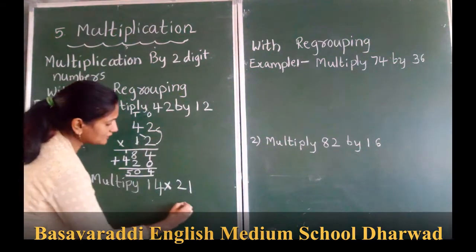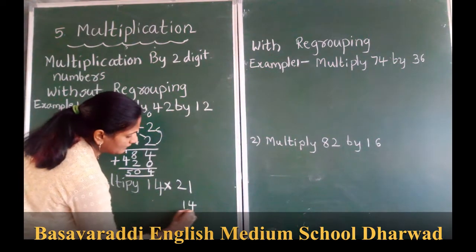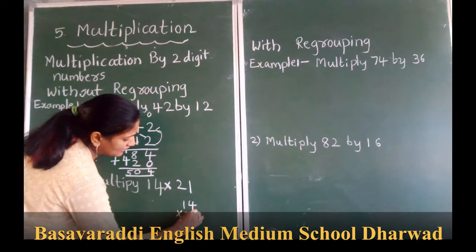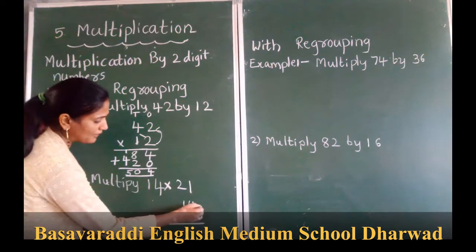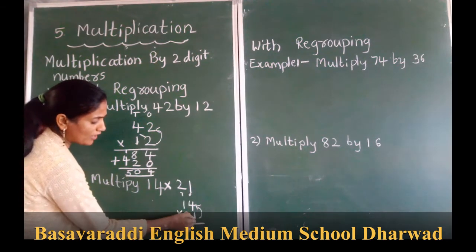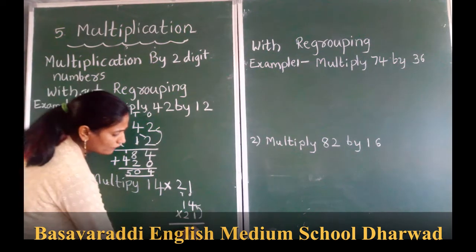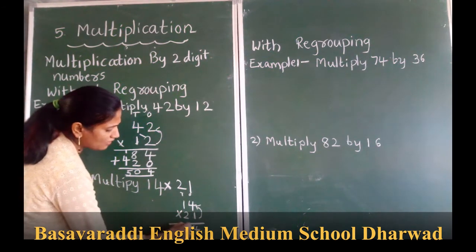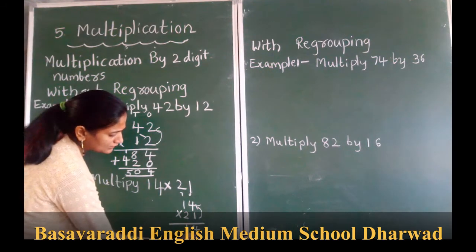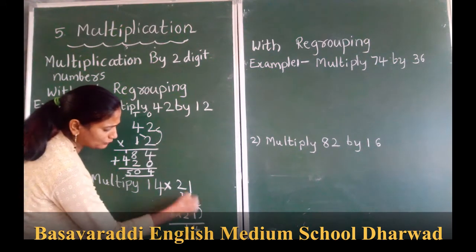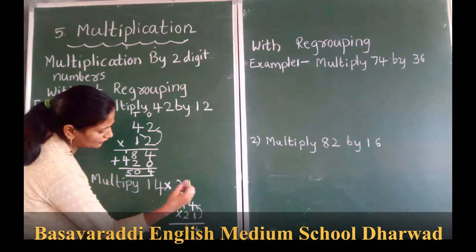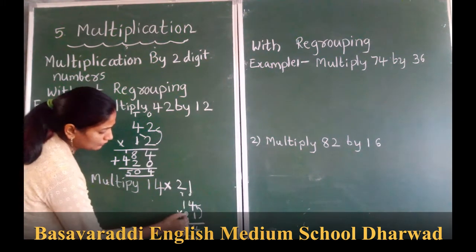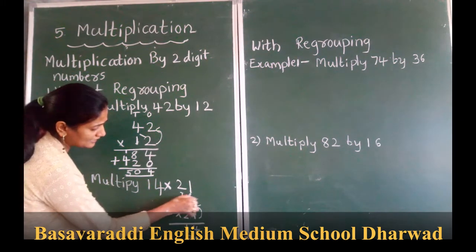The next example is 27 multiplied by 21. First we multiply the ones place. This is 1 space and this is 3 space. 1 times 4 is 4, 1 times 1 is 1. So we put 0 because 1 space is done. Now going to tens: 2 times 4 is 8. We don't carry anything.